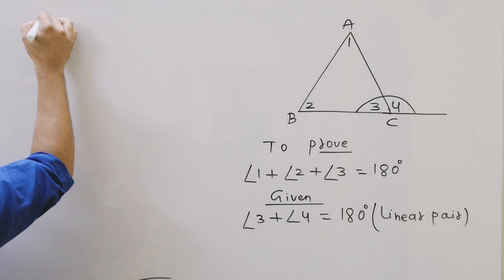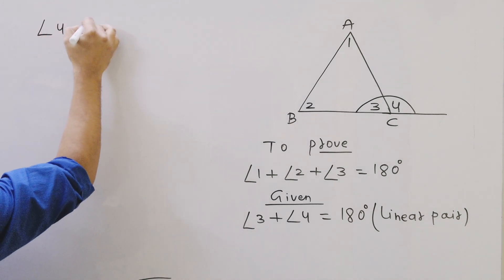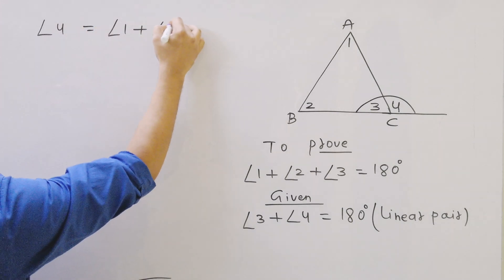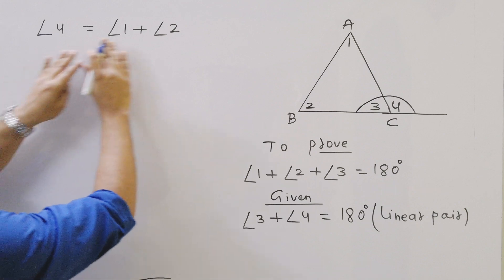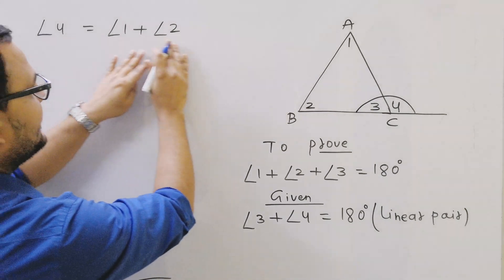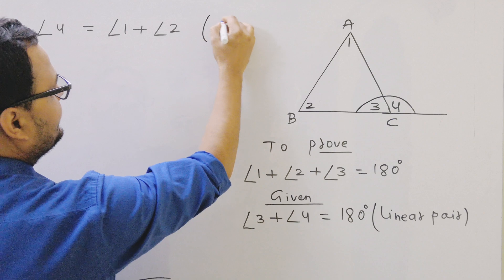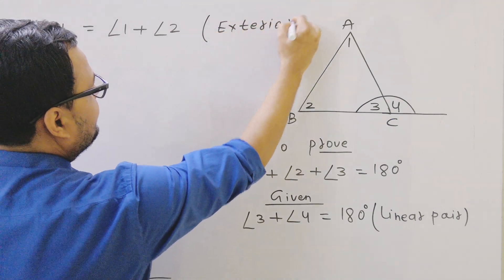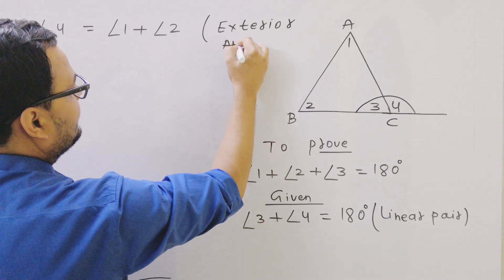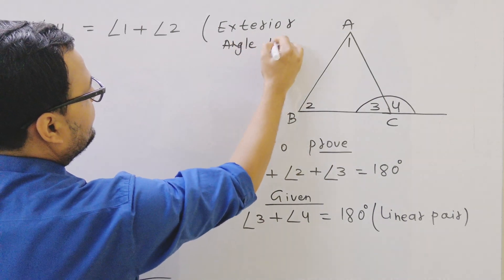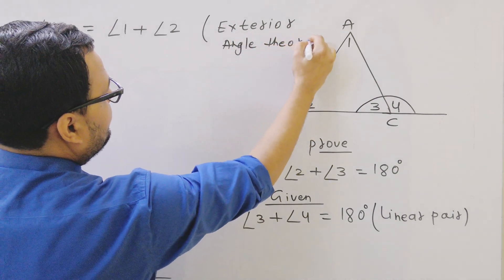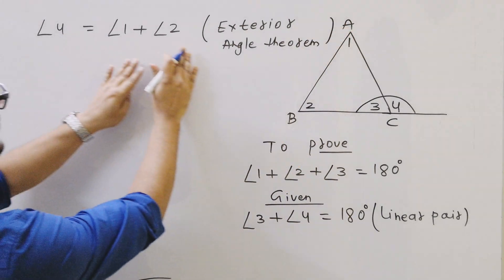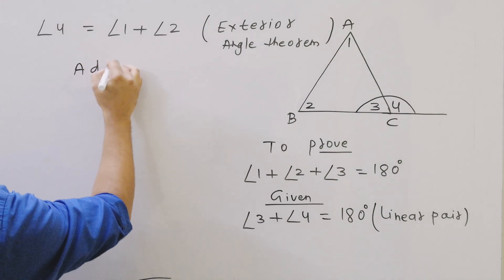Angle 4 equals angle 1 plus angle 2. I can write here exterior angle theorem. Now LHS equals RHS, then add angle 3 to both sides.